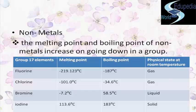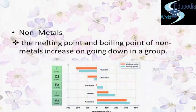Going downwards in Group 17, fluorine is a gas, bromine is a liquid, and iodine is a solid at room temperature — so the state of the element also changes as we move down. A graphical presentation shows the change from negative to positive values, indicating an increasing order of both melting point and boiling point with temperature in degrees centigrade.